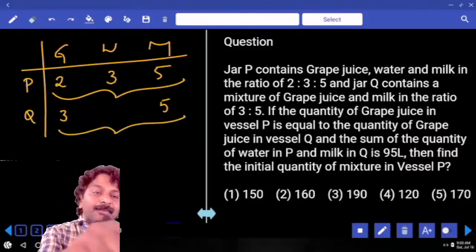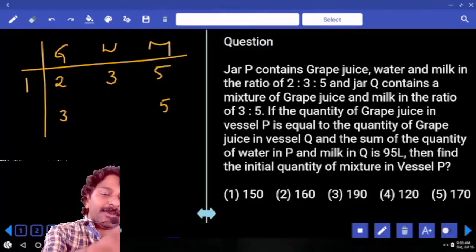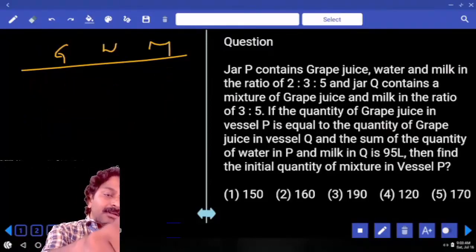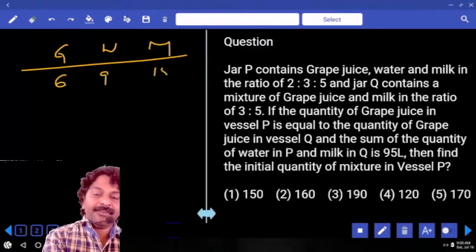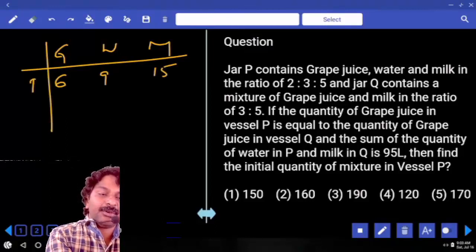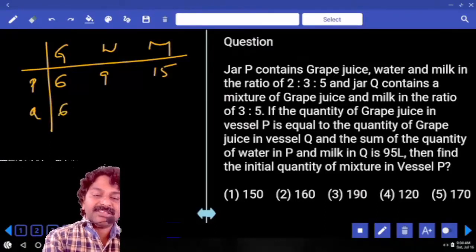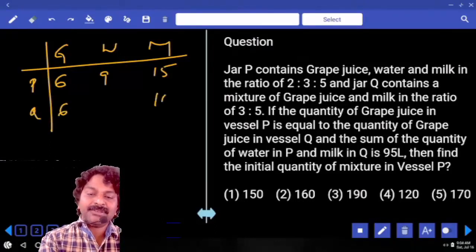second ratio with 2. Then values become 6, 9, 15. Next, Q multiplied by 2, 6 and then 10. Clear?